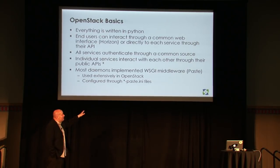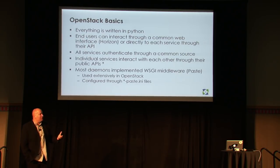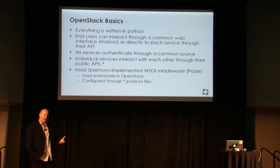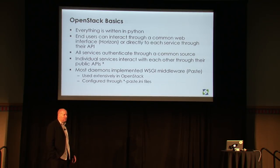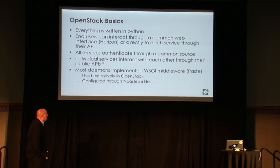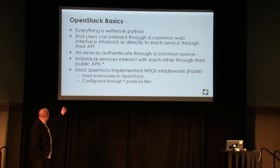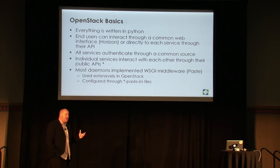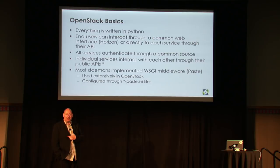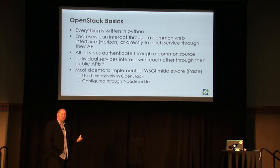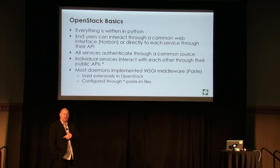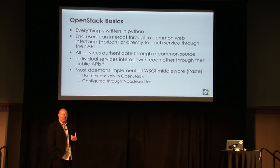Most of the services are written as what we call Paste daemons. Paste is a Python library which allows you to create RESTful daemons. It has a special thing called WSGI middleware, which is used very extensively. That middleware allows you to do pipelining and also allows you to intercept requests before they actually get to a service. That's usually used for authentication — so if an unauthenticated request comes in, it gets redirected to the identity server for authentication or authorization before it gets to the addressed service.